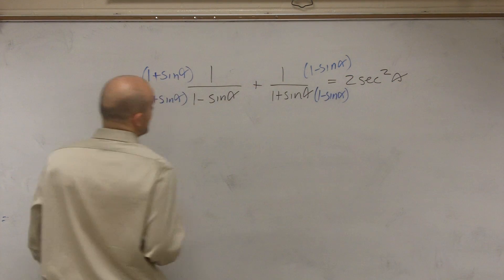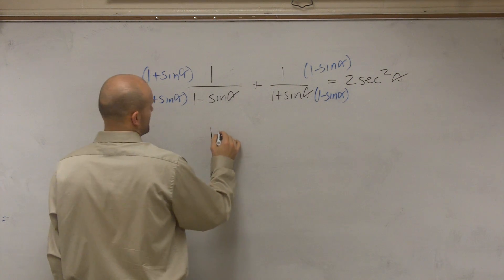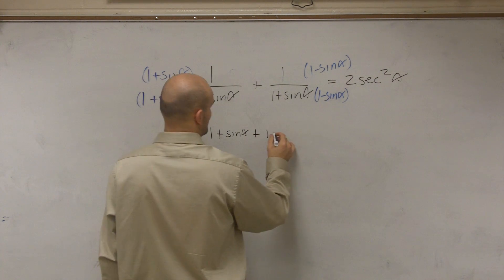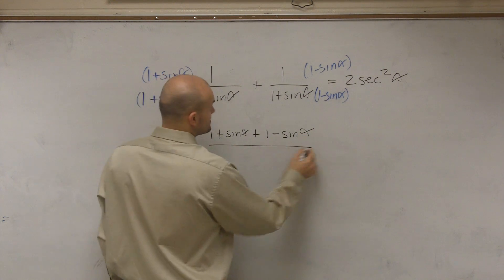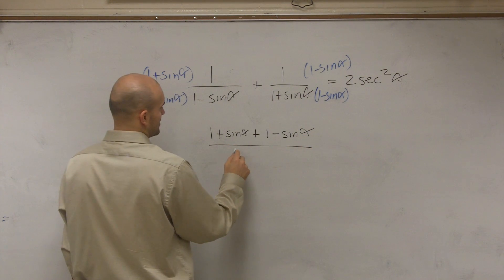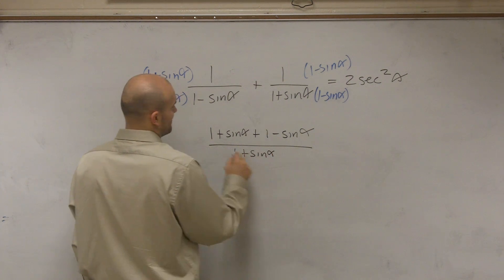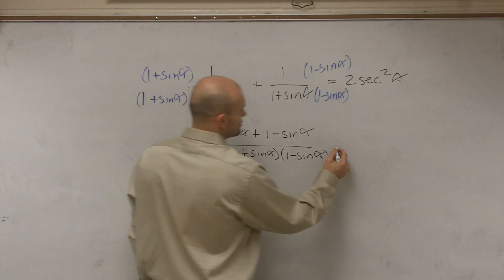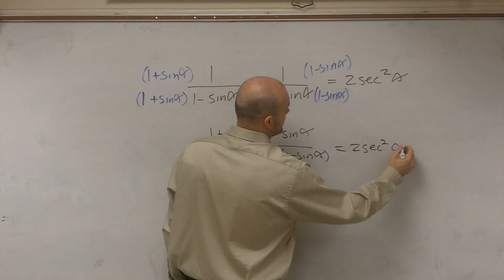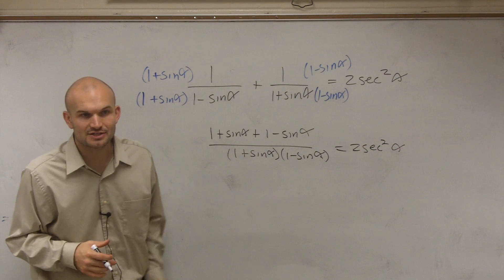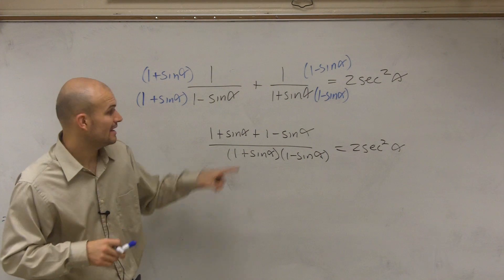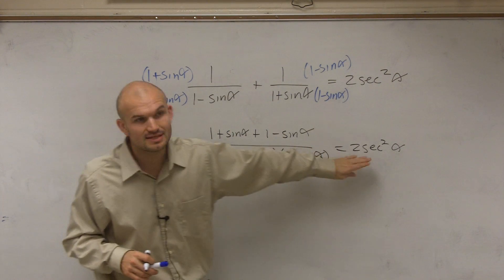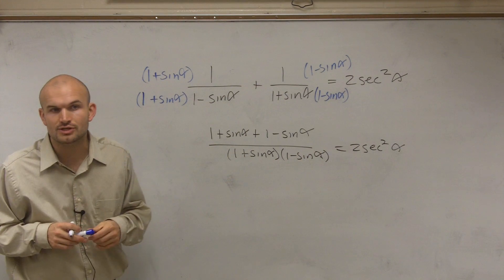Okay, so then when I multiply over, now I'm going to have 1 plus sine of alpha plus 1 minus sine of alpha divided by my common denominator, which I'm not going to factor out yet, I'm just going to leave as 1 plus sine of alpha times 1 minus sine of alpha. And that's supposed to be verified as 2 secant squared of alpha. So do you guys see by just adding my two fractions, what I have simply done is I've now gotten it away from me having two different terms. So now it's into one term. It's still a fraction, whereas this side is not a fraction, but I've at least now combined it into one term.